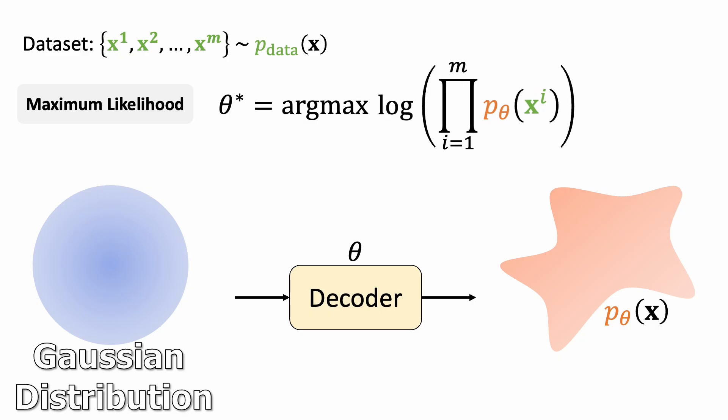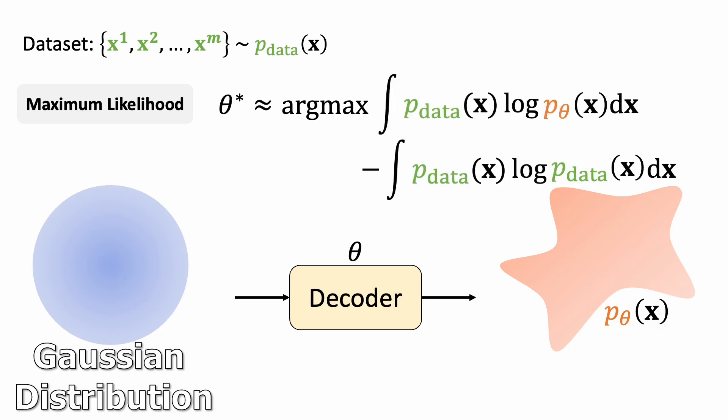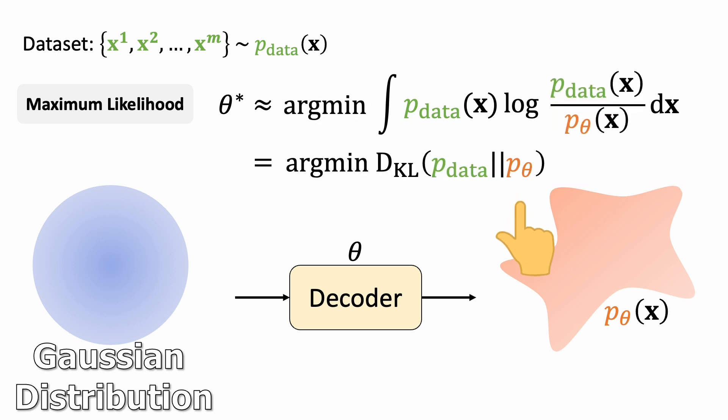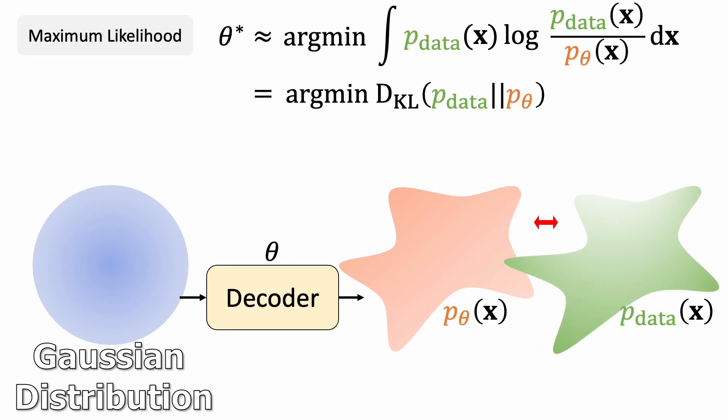Let's see what this maximum likelihood is trying to do. We first apply a log function to simplify the expression, turning the product into a sum. This helps us rewrite it as an expectation. Here is the definition. If we subtract a constant that has nothing to do with the parameter theta, we find that this is just the KL divergence between the distribution from our generative model and the data distribution. So, maximizing the likelihood means minimizing the similarity between these two distributions.